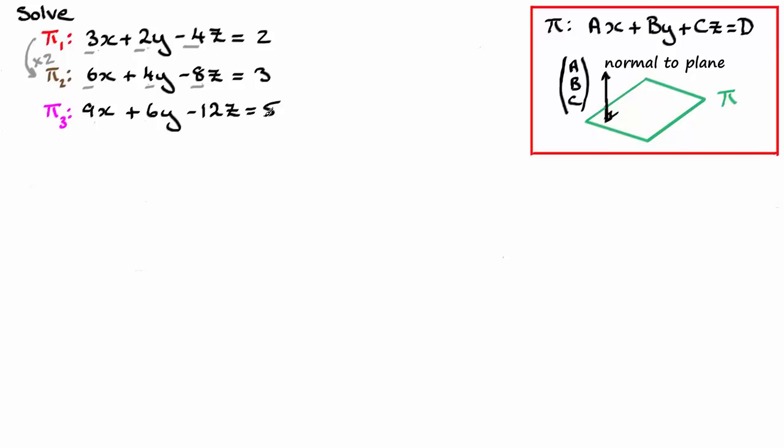And for the third equation, the third plane, I can see that if I multiply the three, the two, and the negative four by three, I'm going to get the coefficients of x, y, and z in this equation here, the nine, the six, and the minus twelve.